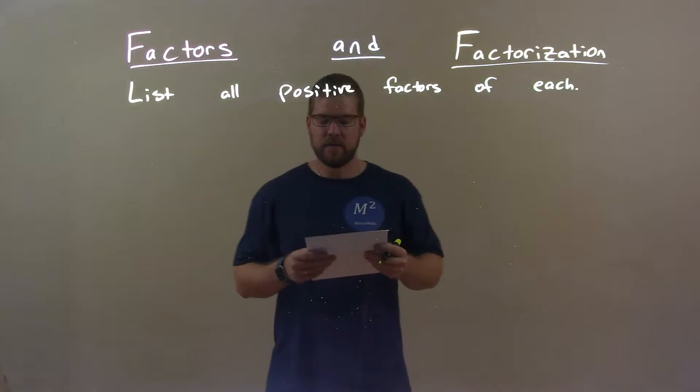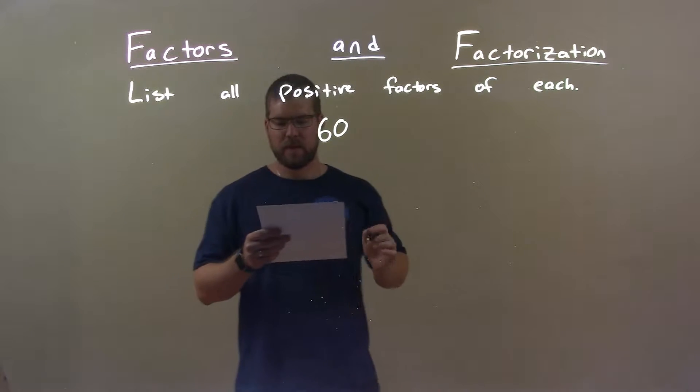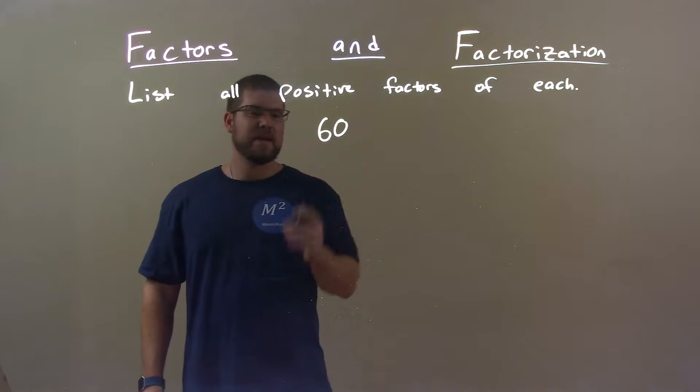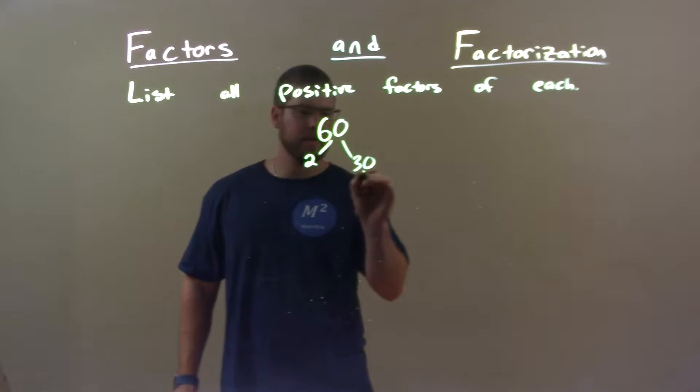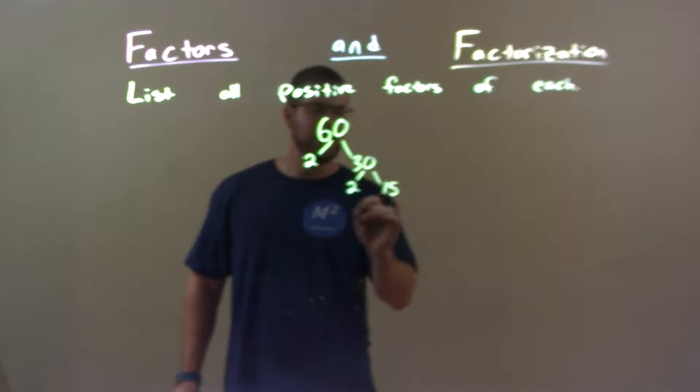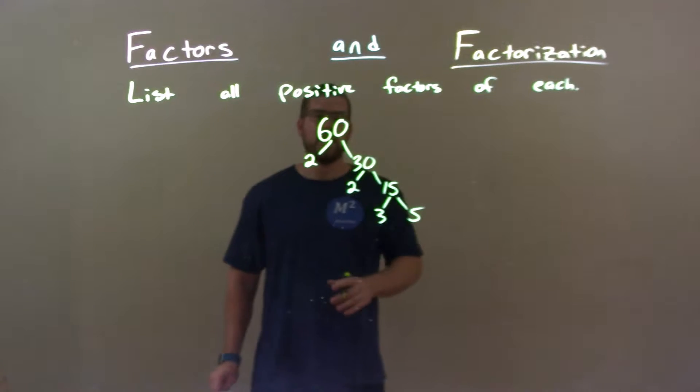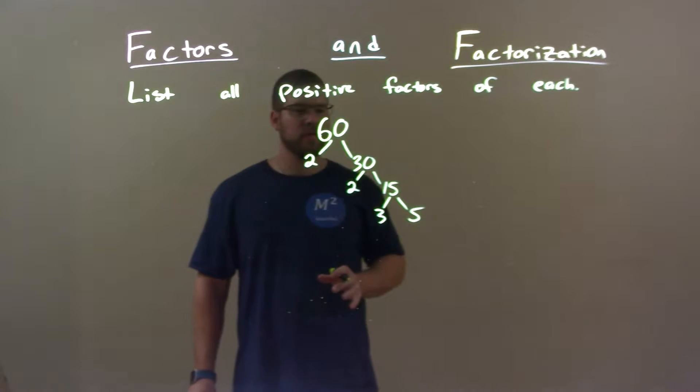So, if I was given this number, 60. Okay, so let's go break down 60. 60 is 2 times 30. 30 is 2 times 15. And 15 is 3 times 5. So now I've broken down my prime factorization, let's go make our list.